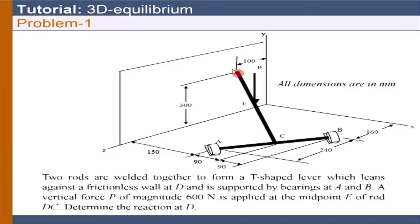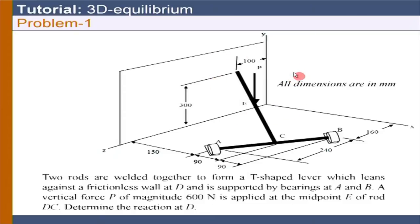However, it involves some geometrical calculation in order to take the moment of forces about AB. There is a dx here and this load is applied, so ultimately we need to find the perpendicular distances. Once you get the answers, you can post what dx is — the reaction at point D.